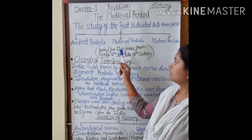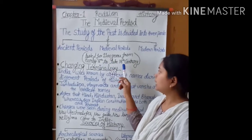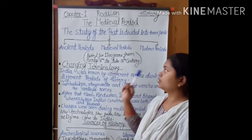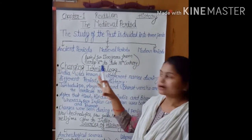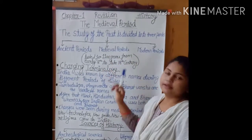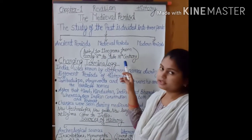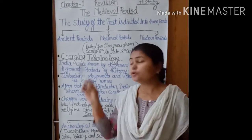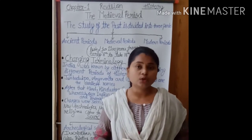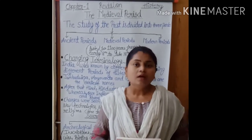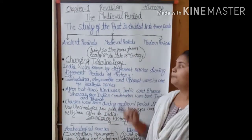The medieval period lasted for 1100 years, from the early 8th to the late 18th century. During this medieval period, a lot of changes came in society, polity, and economy — there were a lot of changes made in our country during the medieval period, which we'll read about in this chapter.